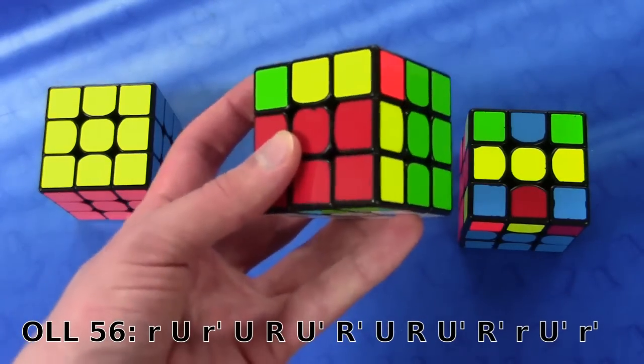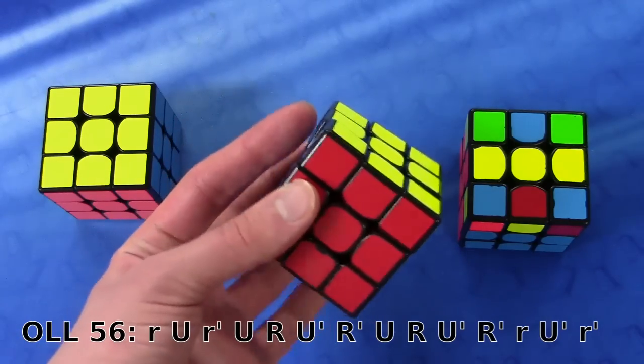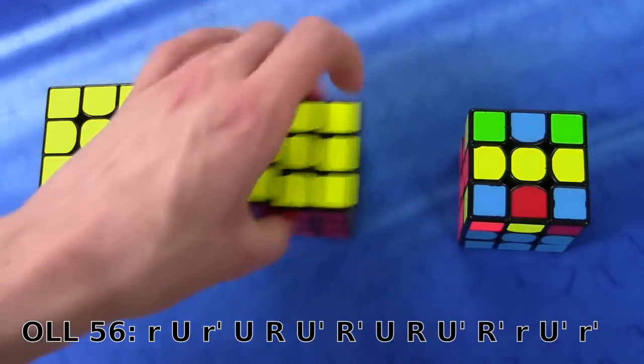And now I am going to use my ring finger since I have a U prime in the middle. So like this. And for the R prime of course, I'm going to just bring my ring finger back.